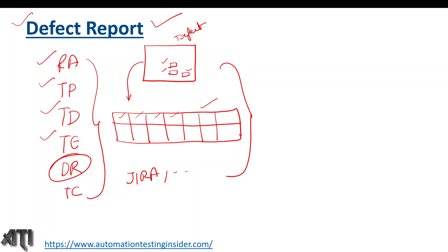Another way is using a bug tracking tool like Jira, Bugzilla, or PR Tracker. We have various tools available in the market to assign defects to the development team. These tools have the same fields as the Excel template — like a unique defect ID that is generated automatically, summary of the defect, and steps to reproduce — which we will discuss further.